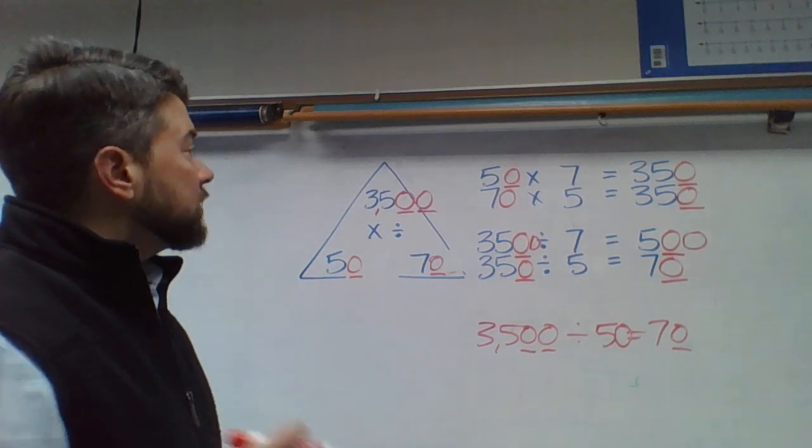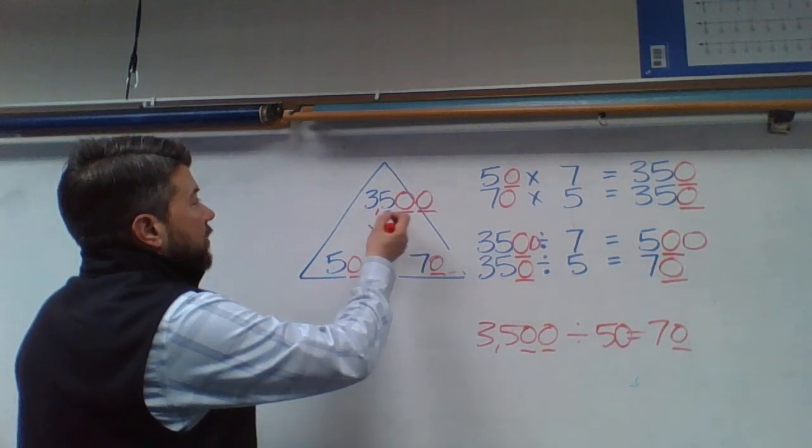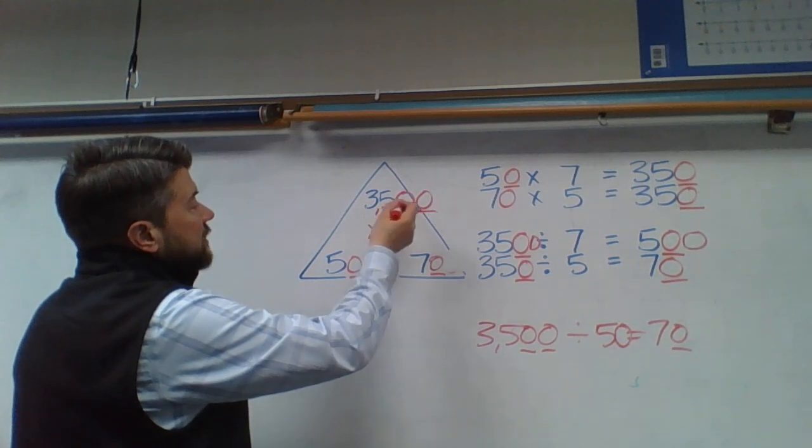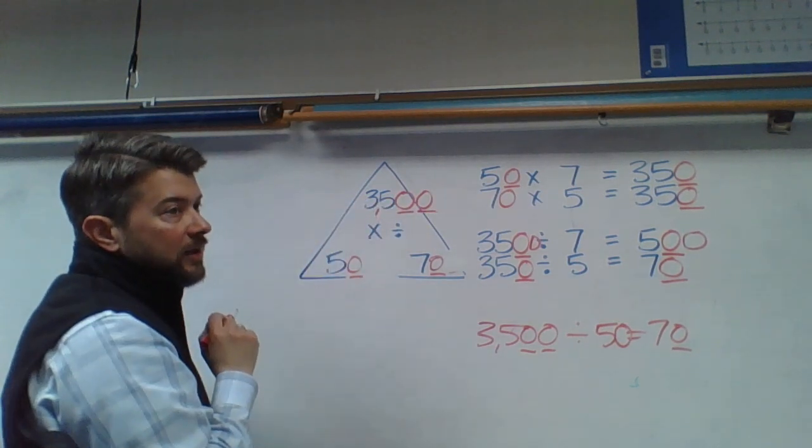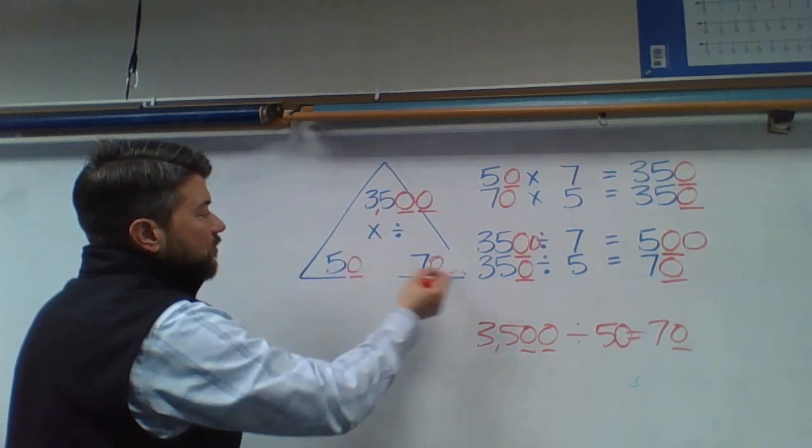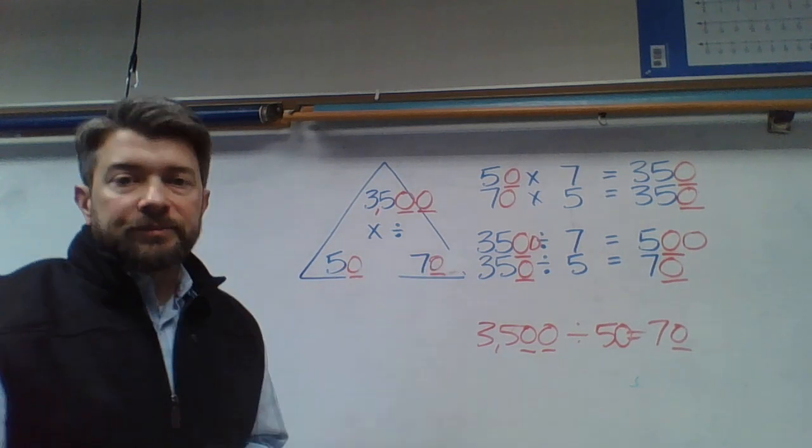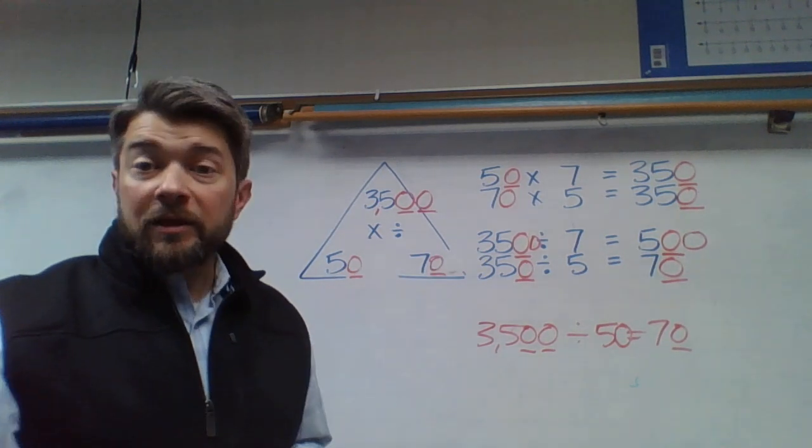So the thing that you need to remember with fact families is that the number of 0s behind the number at the top has to equal the number of 0s somewhere between the two numbers on the bottom. Thank you for listening.